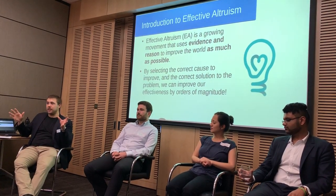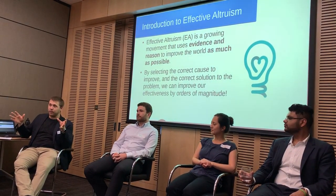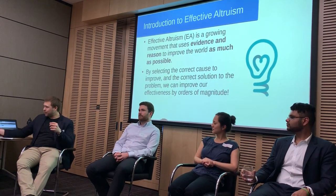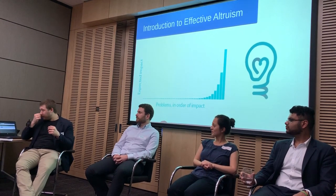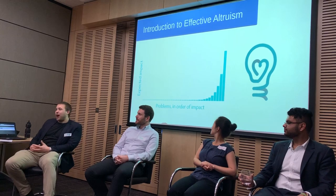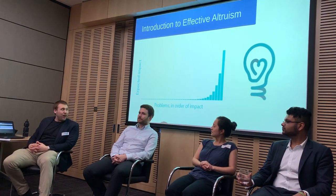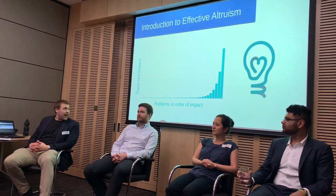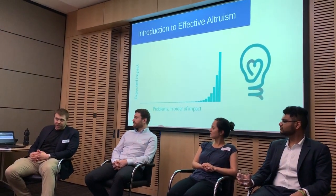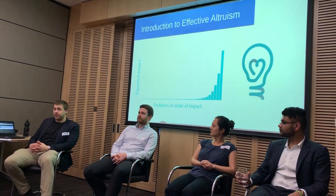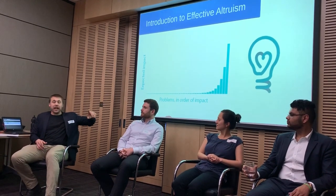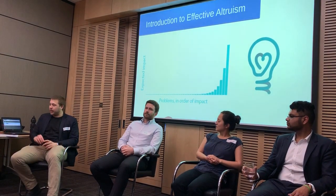By selecting the correct cause — and this is very difficult, but also very important — we can actually improve the good we do by orders of magnitude. I prepared a graph, one without a scale, that talks about expected impact and problems in order of impact. You'll notice there's a long tail skewed to the left, where there are lots of problems that have some positive impact but not much, and there are a few problems that if we dedicate our resources to solving, we'll have a large positive impact — much higher than we could with any of those other causes combined.